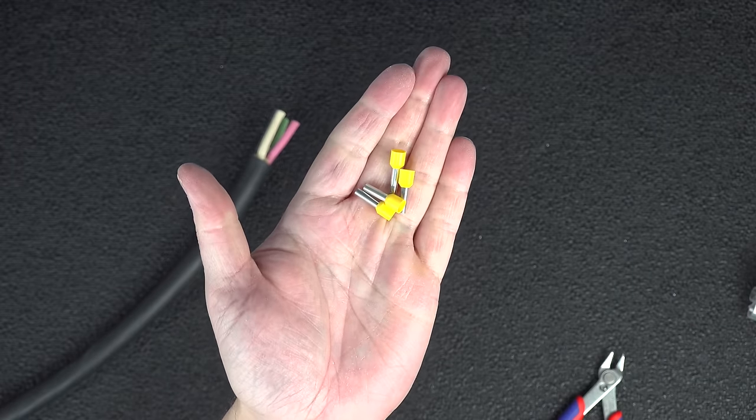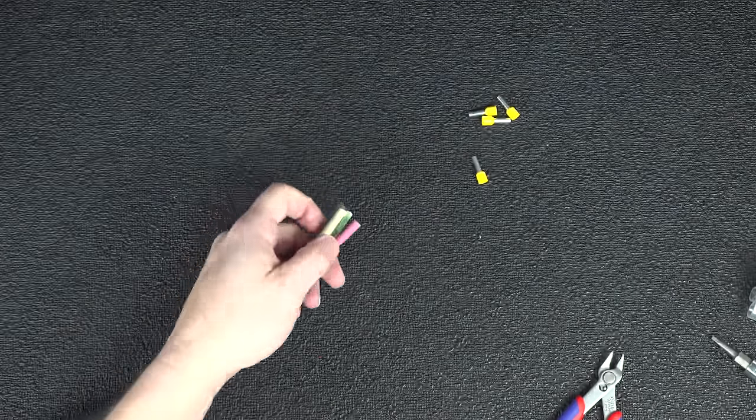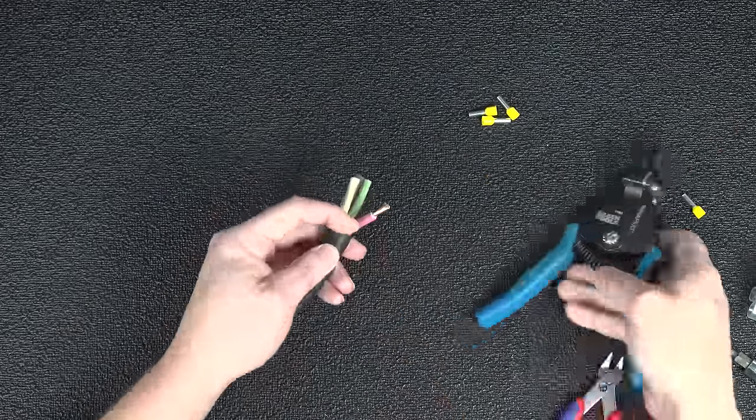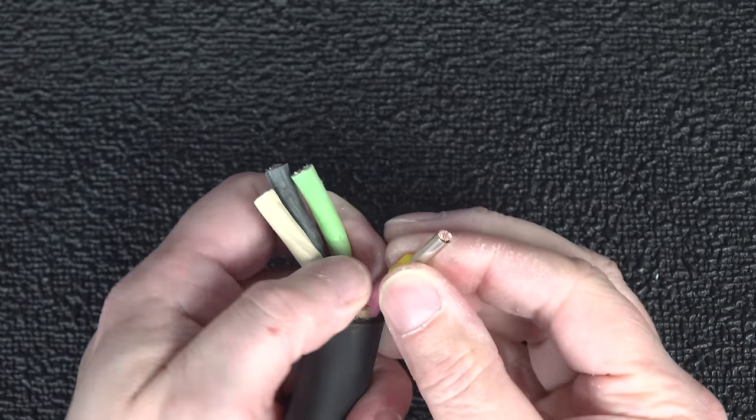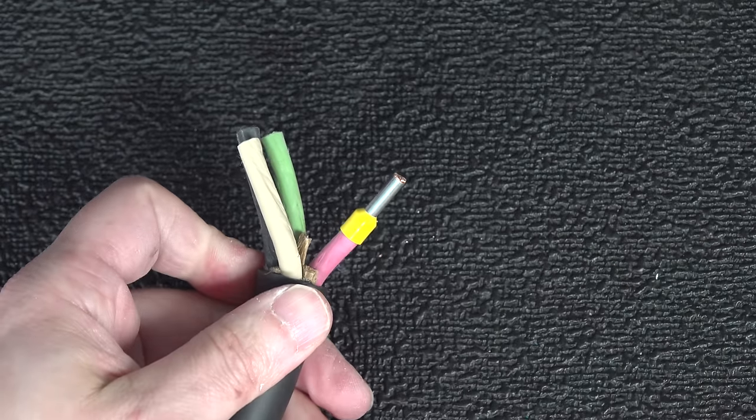But I'm going to do things a little bit differently by using these things called wire ferrules. Ferrules can turn stranded wire like this into essentially a solid conductor. That's also going to make it a lot easier to insert them into the back of the plug.